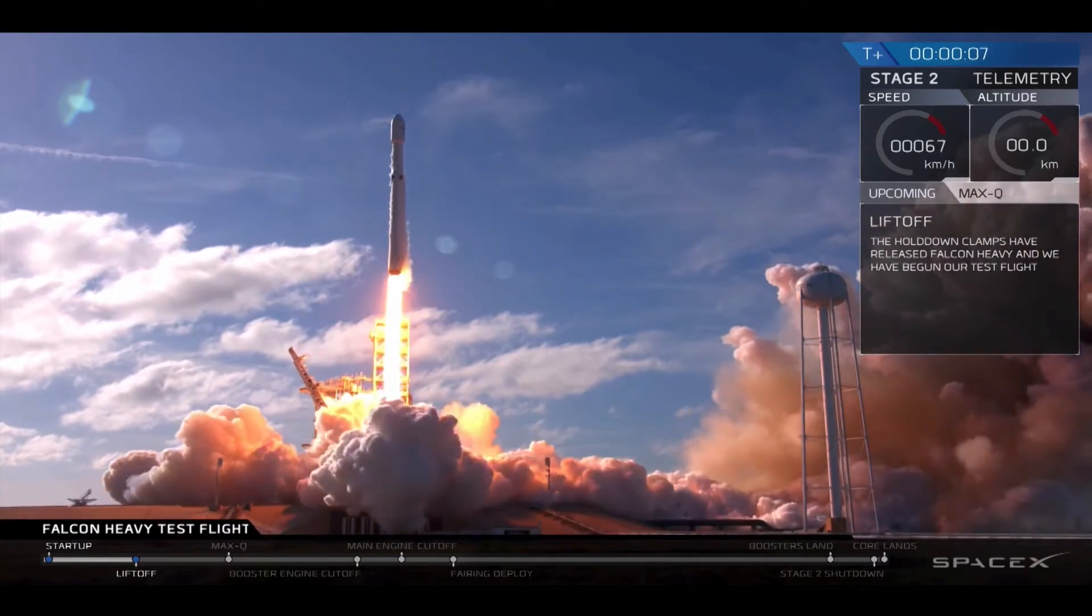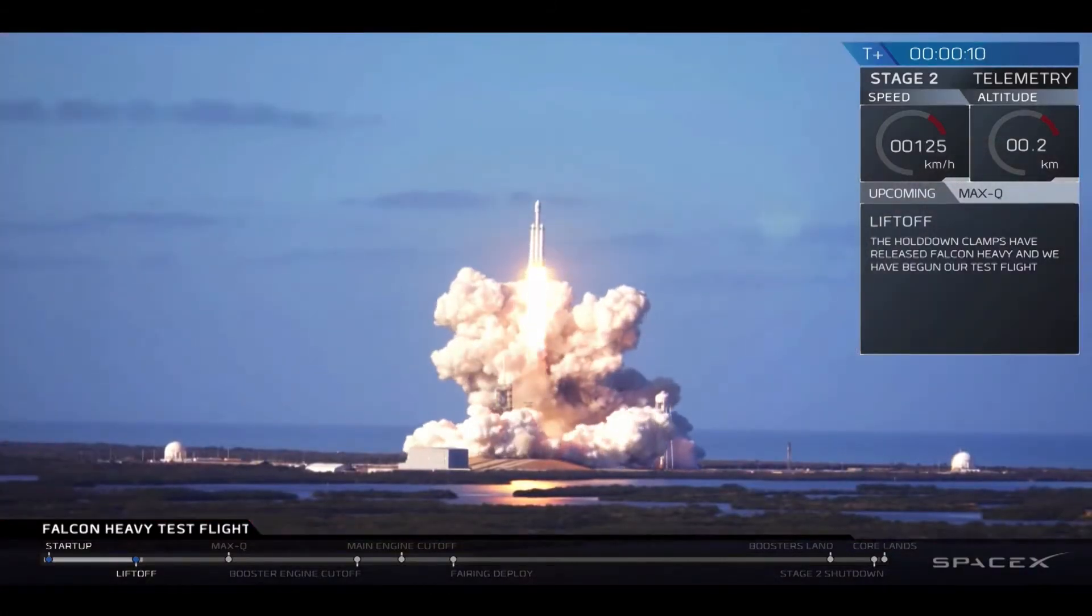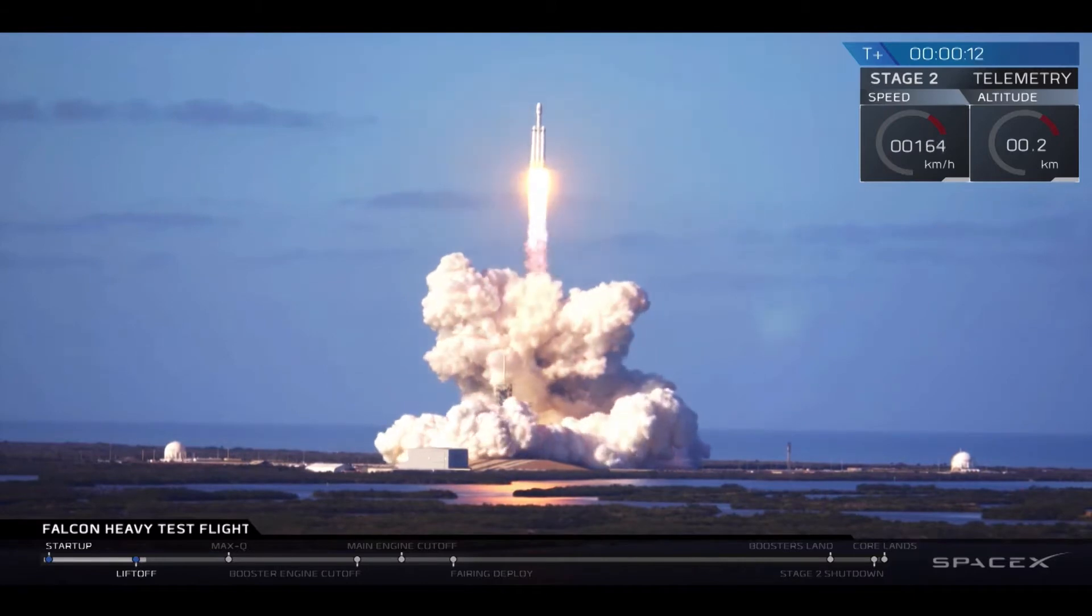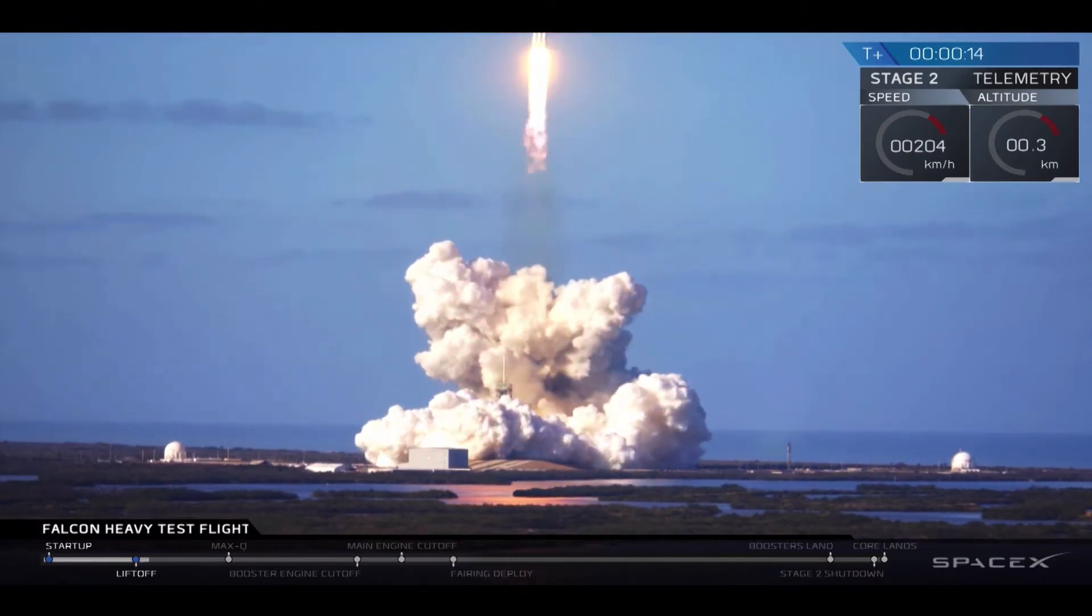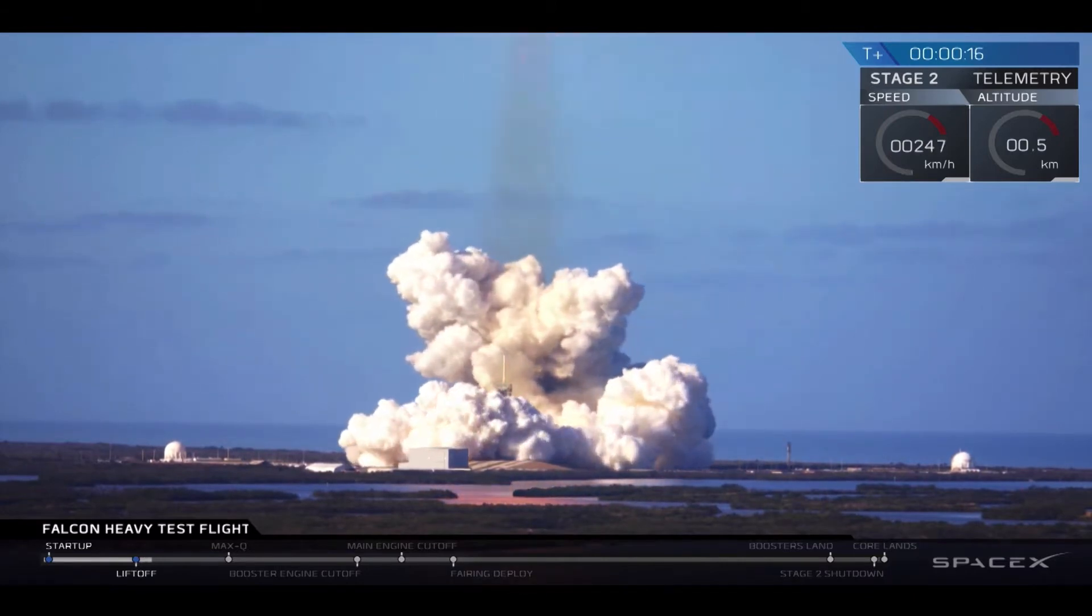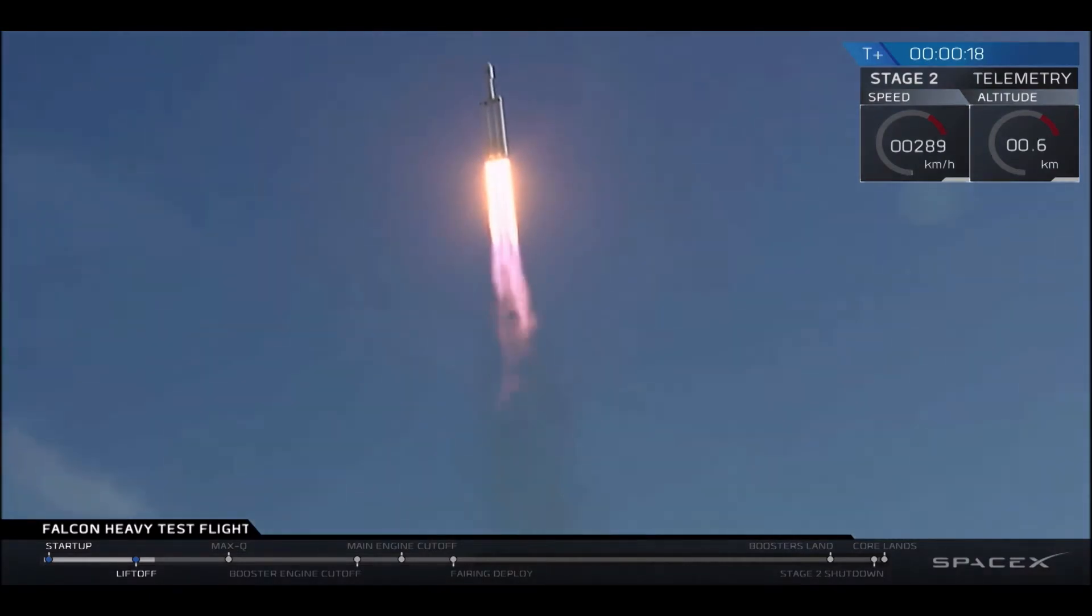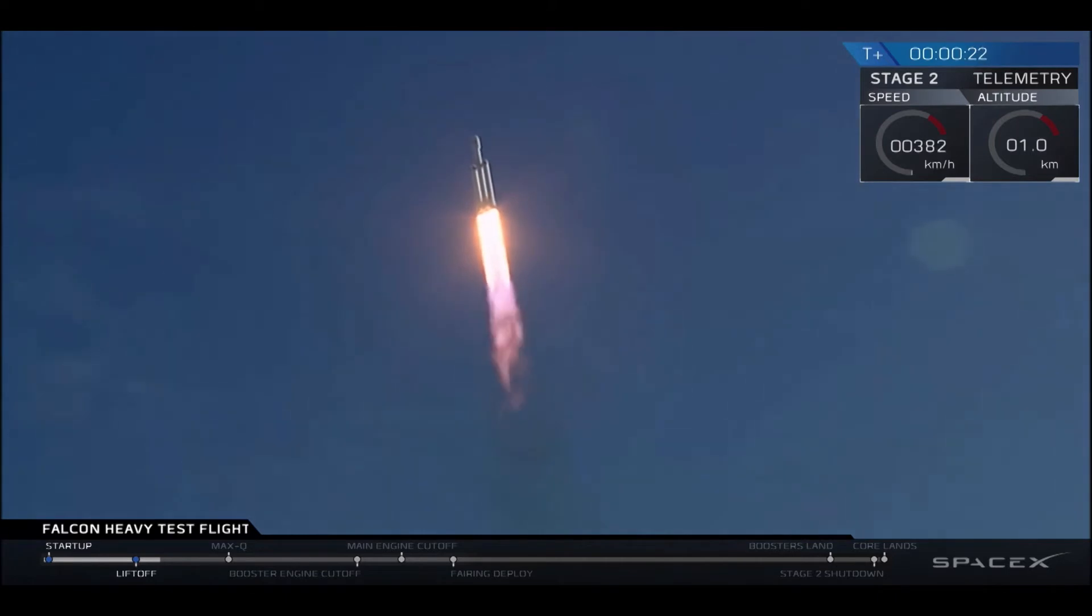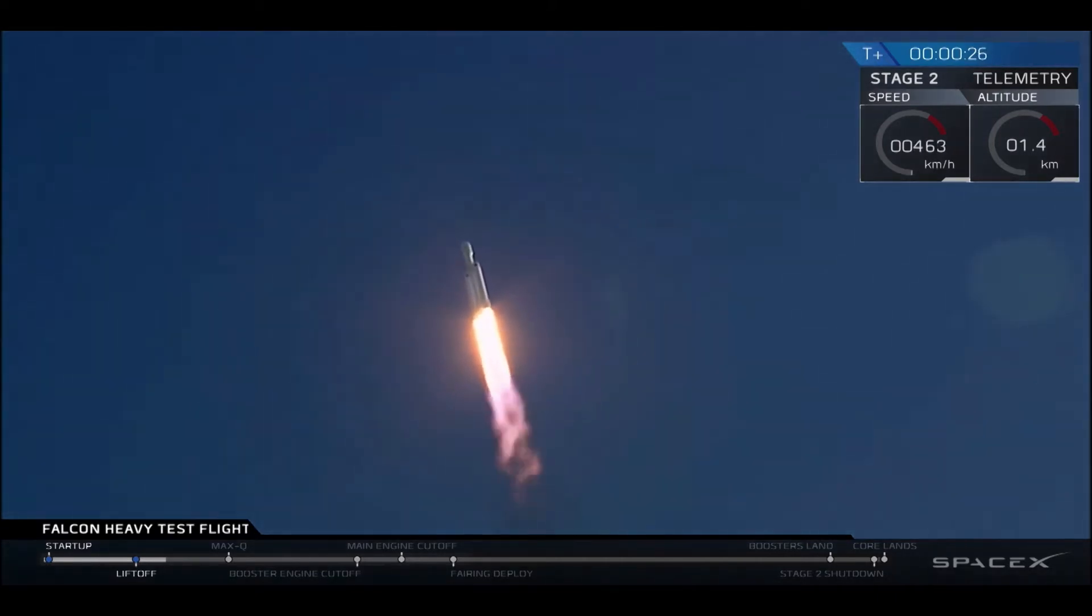But first, we have to get the rocket off the ground and into the atmosphere. But how do we do that? Rocket propulsion happens to be a wonderful example of the use of the conservation of momentum. Simply put, the principle states that if the net external forces on a system is zero, then the total internal mechanical momentum is constant.